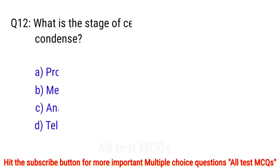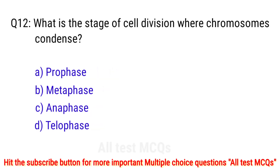Question number 12. What is the stage of cell division where chromosomes condense? The right answer is option A: prophase.